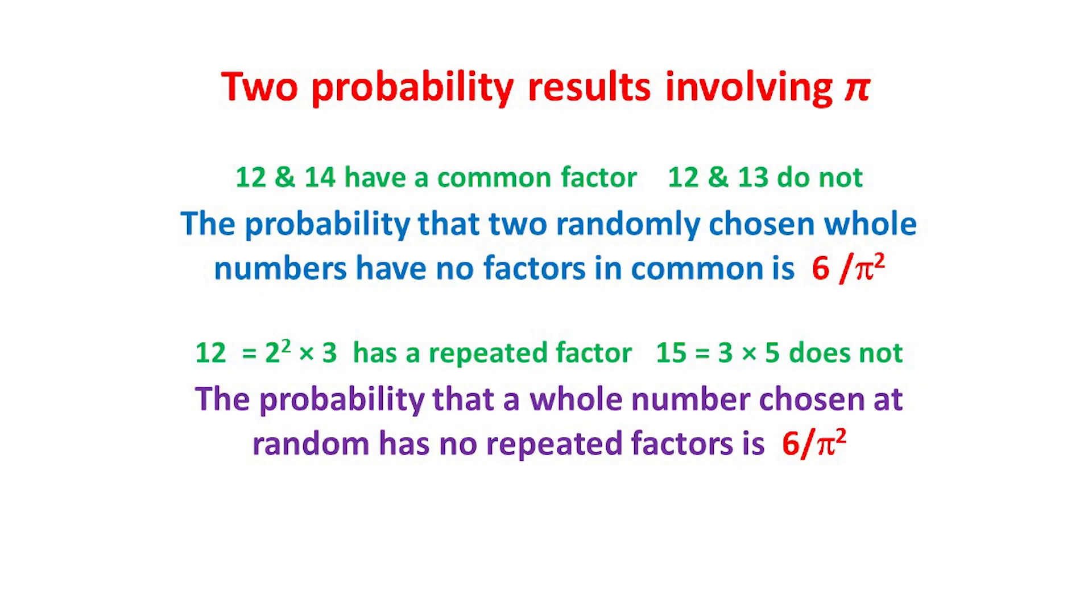Moreover, the number 12 equals 2 times 2 times 3 has the repeated factor 2, whereas the number 15 equals 3 times 5 has no repeated factor. And in general, the chance that a given whole number chosen at random has no repeated factor is again 6 over π².